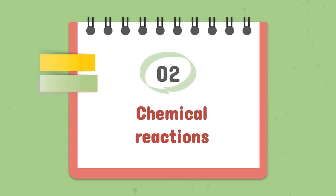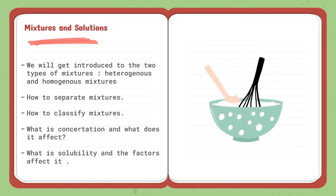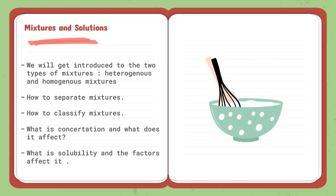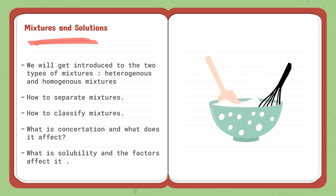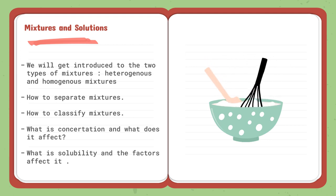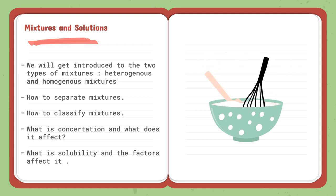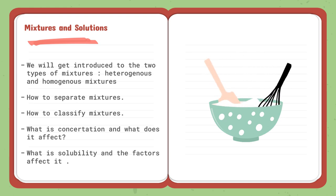Moving on to Topic 2: Chemical Reactions. The first lesson is mixtures and solutions. We will get introduced to the two types of mixtures — heterogeneous and homogeneous — and learn techniques to separate them. Mixtures will be classified into three categories: colloid, suspension, or solution. We will also explore the term concentration and how it affects mixture properties, and discuss solubility and the two factors that affect it: temperature and pressure.